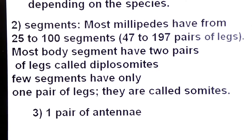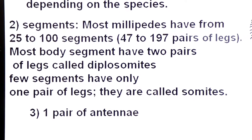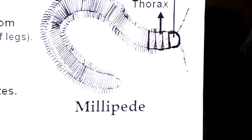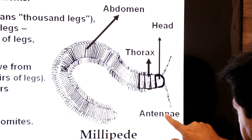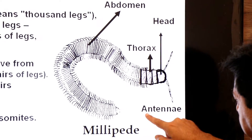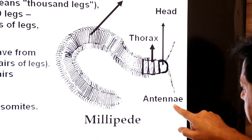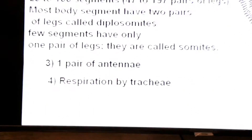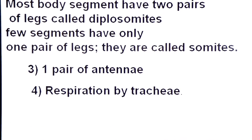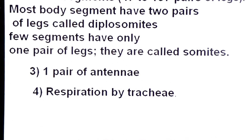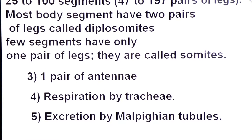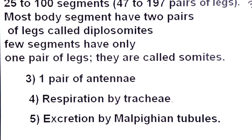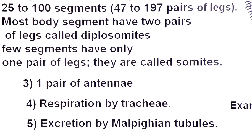Millipedes have one pair of antennae as sensory organs. Respiration occurs by tubes called tracheae, and excretion by tubes called Malpighian tubules. An example is Thyrogelutus, a genus of millipede.